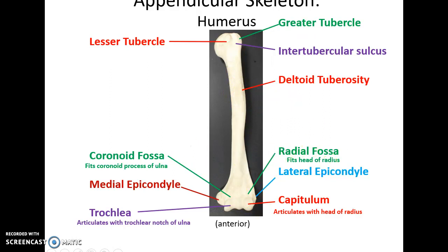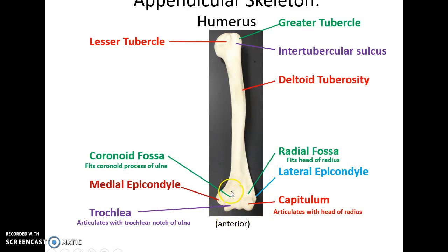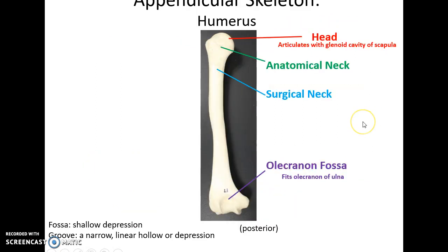Going down to the distal end, you have the smooth rounded trochlea on the medial side, the capitulum on the lateral side. Above them is the lateral epicondyle and the medial epicondyle. Above the trochlea is the coronoid fossa, and above the capitulum is the radial fossa.